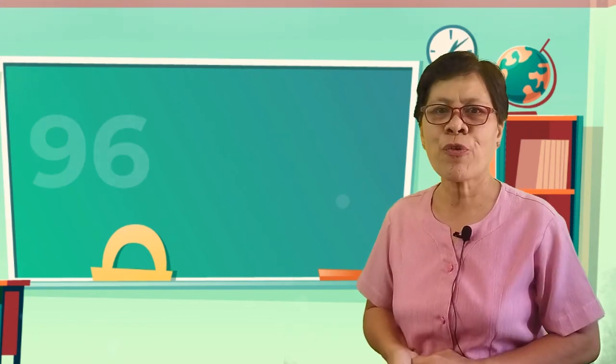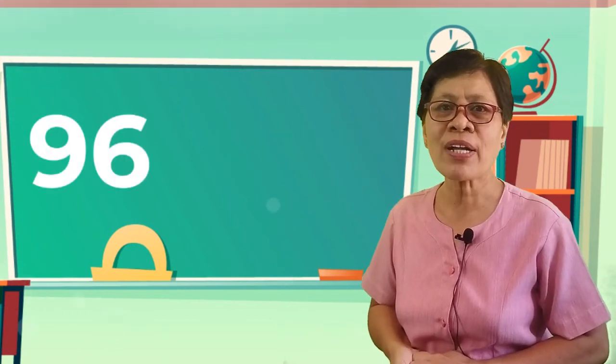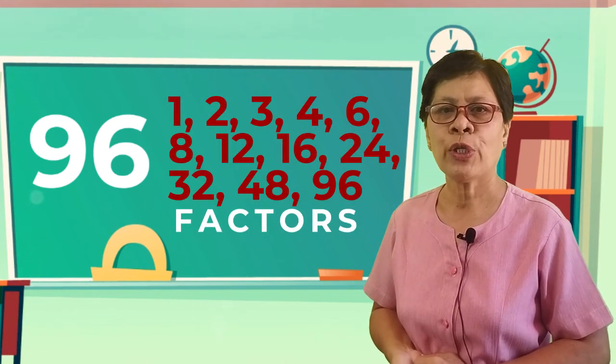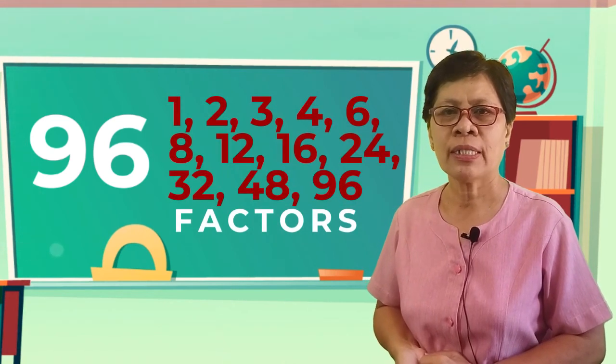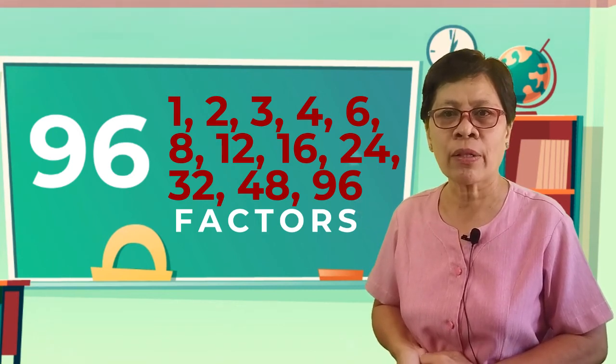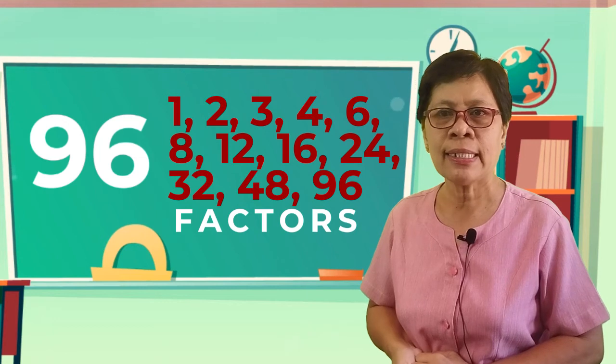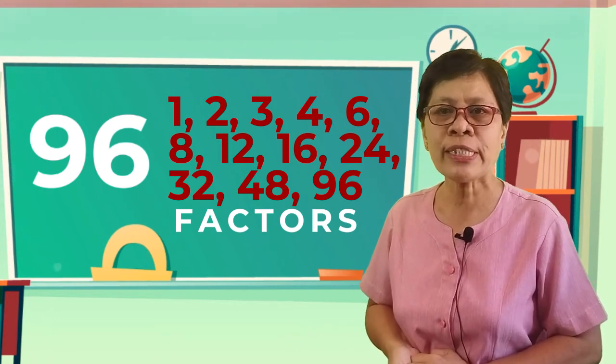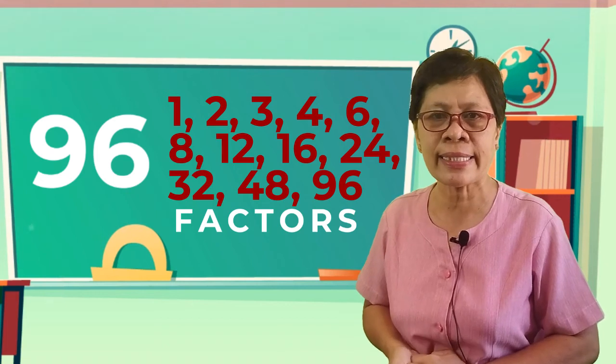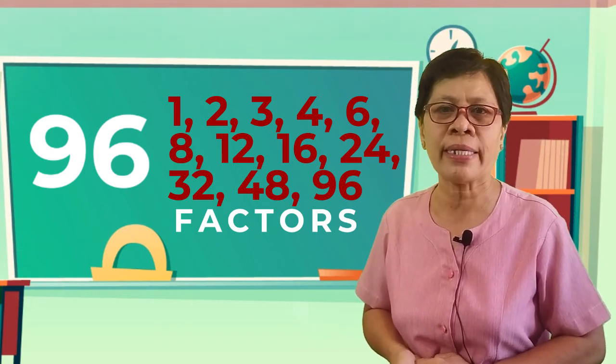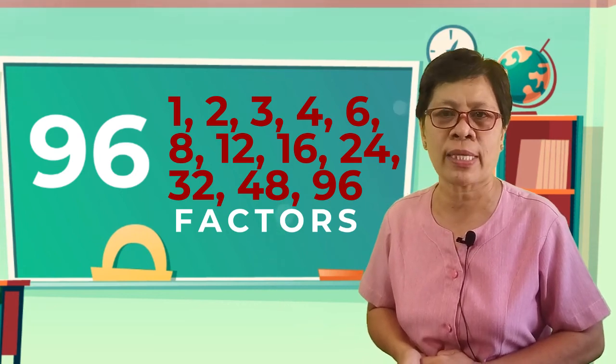And for 96, the factors are 1, 2, 3, 4, 6, 8, 12, 16, 24, 32, 48, and 96. And this makes 45 and 96 composite numbers.